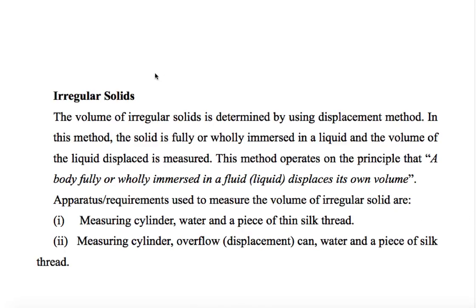If our object is an irregular solid, what do we do? We have two methods to measure its volume. The volume of an irregular solid is determined by using the displacement method. In this method, the solid is fully or wholly immersed in a liquid, and the volume of liquid displaced is measured. This operates on the principle that a body fully immersed in a fluid displaces its own volume.